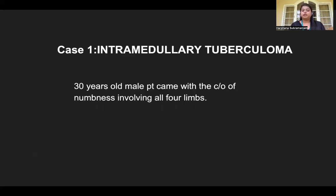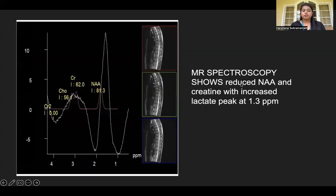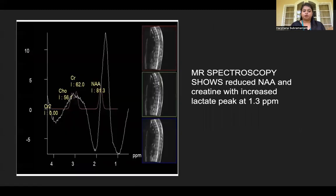We will now discuss the common spinal cord neoplasms. The first case is an intramedullary tuberculoma. A 30-year-old male had a history of numbness involving all four limbs. T2-weighted imaging showed a long segment intramedullary hyperintensity from C8 to D8 level. T1 fat-saturated post-contrast showed intense homogenous enhancement from D4 to D8. MRS showed reduced NAA and creatine with increased lactate peak at 1.3 ppm. Biopsy confirmed tuberculosis etiology.